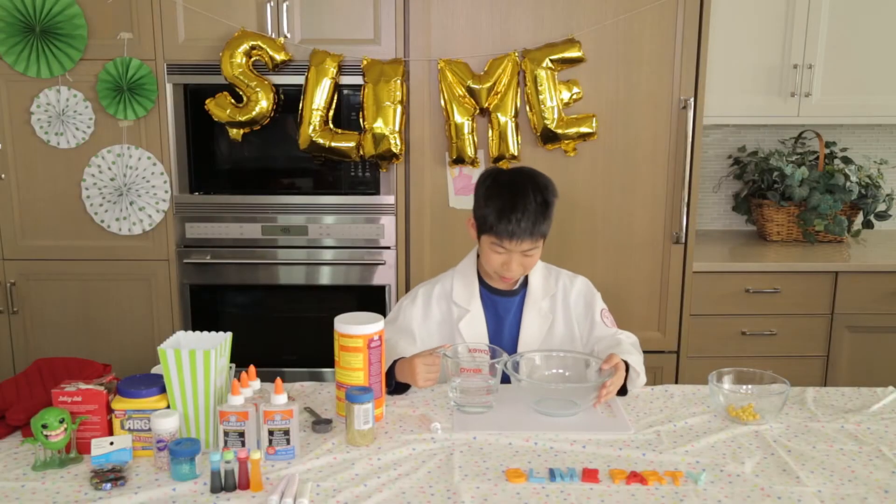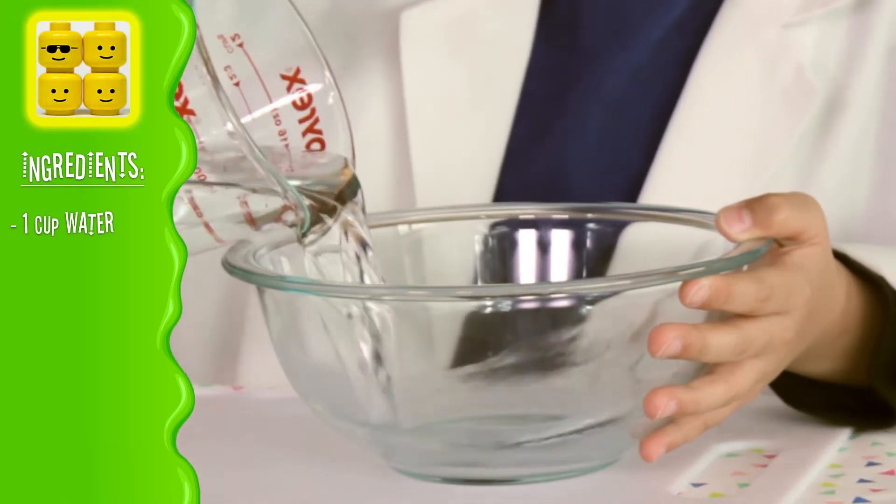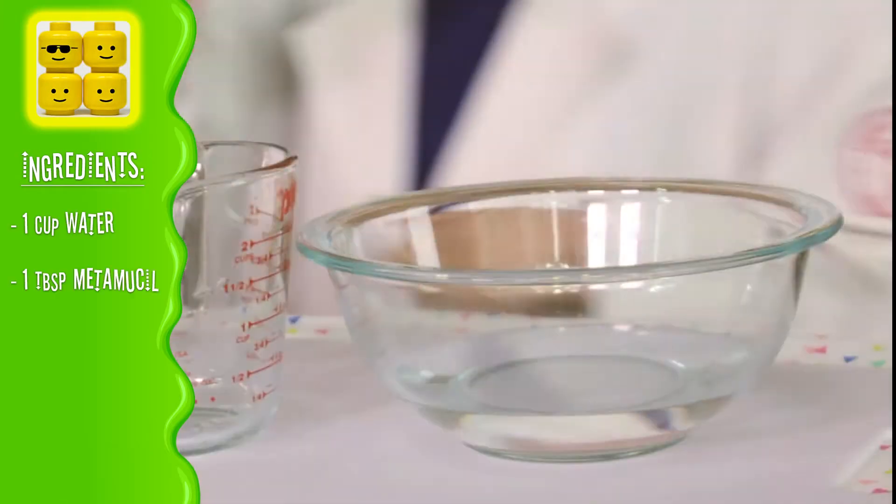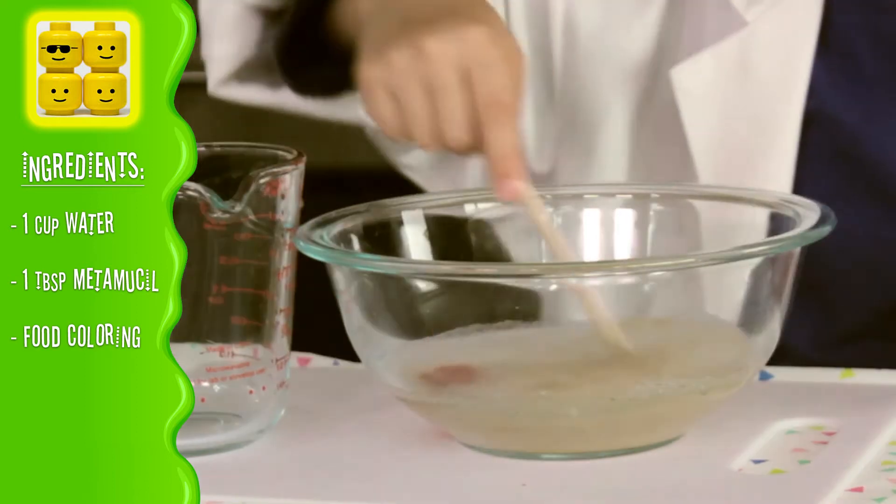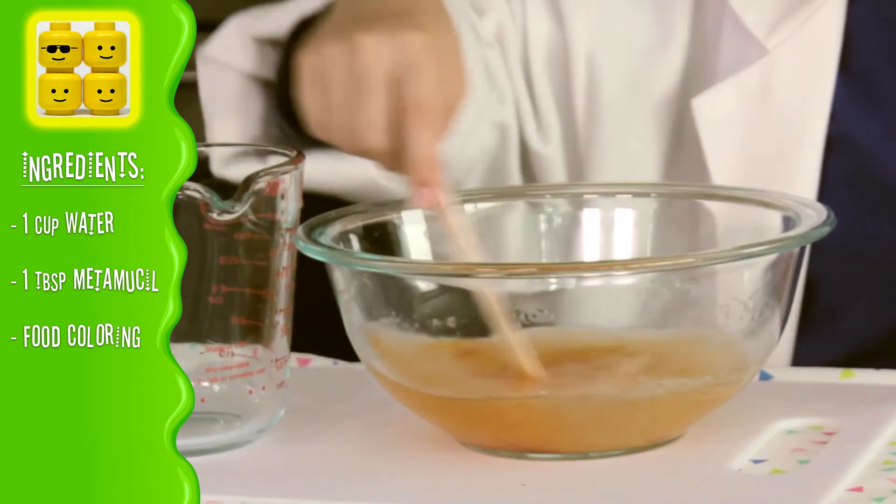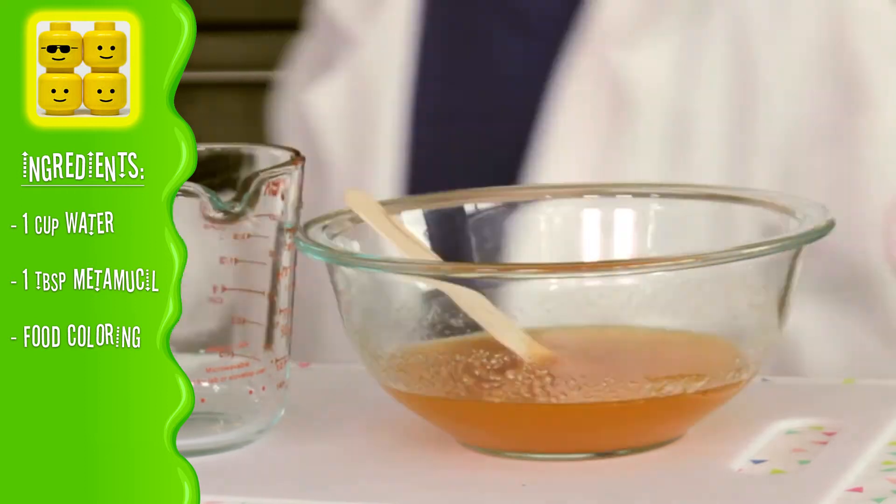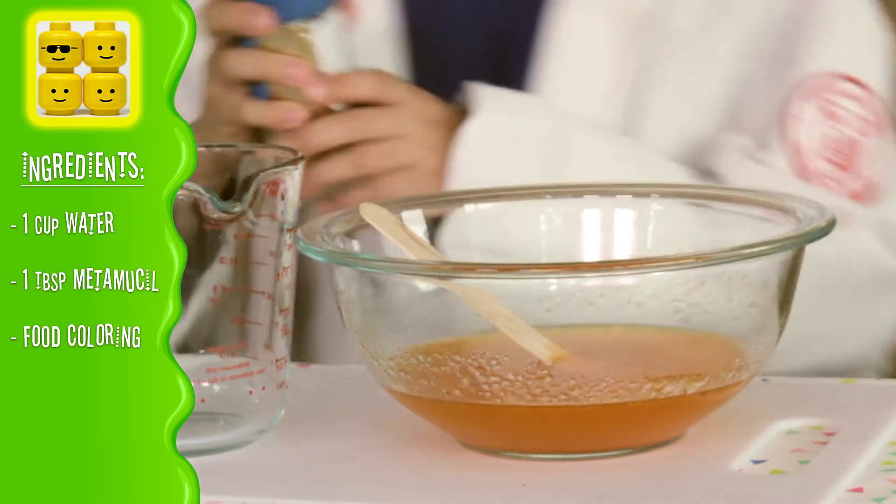Okay, let's make our slime. One cup of water, Metamucil, one tablespoon orange food color. Mix this. This becomes orange. Now I'm gonna put gold glitter.